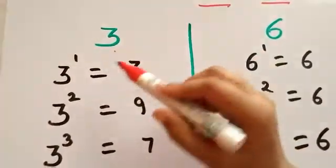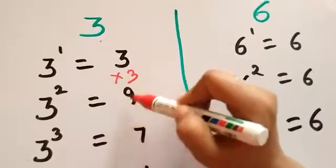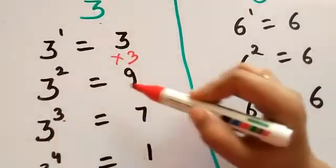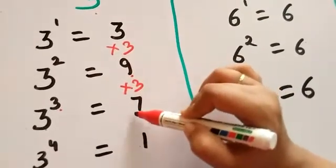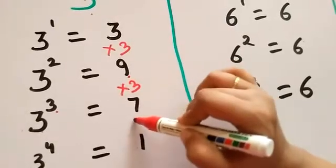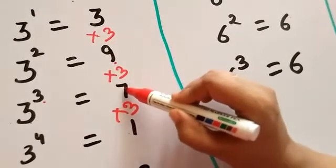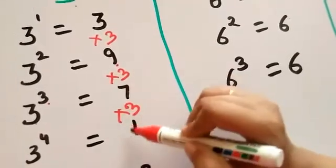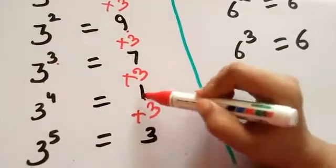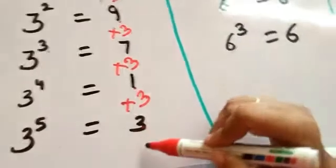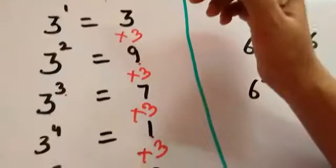3 raised to the power 1 is 3. 3 raised to the power 2, that is 3 into 3, is 9. 3 raised to the power 3, that is 9 into 3, is 27 — unit digit 7. 3 raised to the power 4, that is 7 into 3, is 21 — unit digit 1. 3 raised to the power 5: 1 into 3 is 3. 3 raised to the power 6: 3 into 3 is 9.